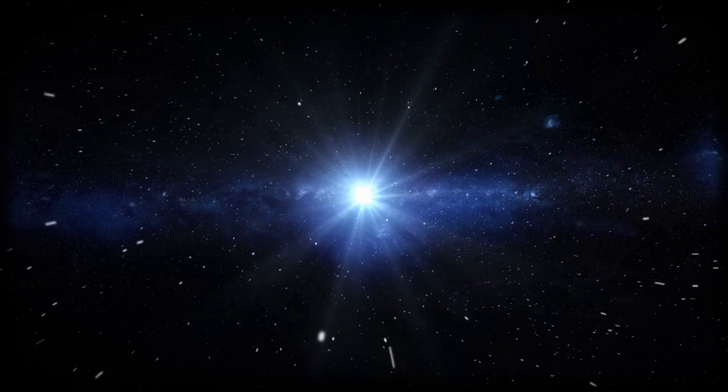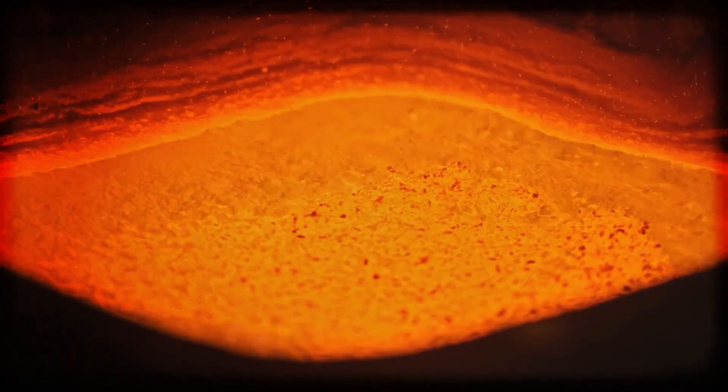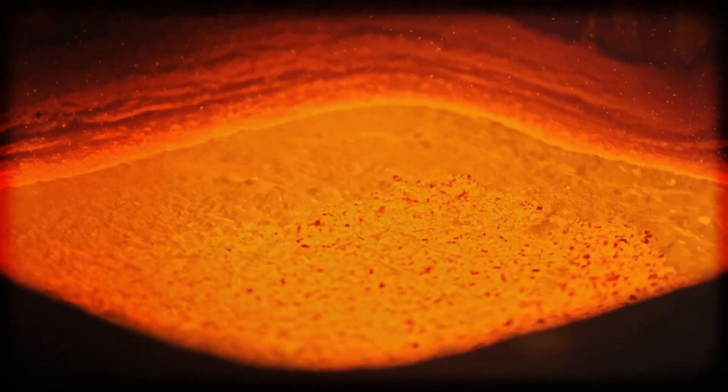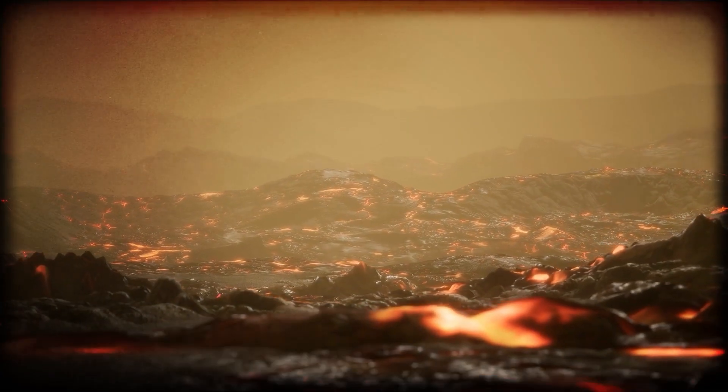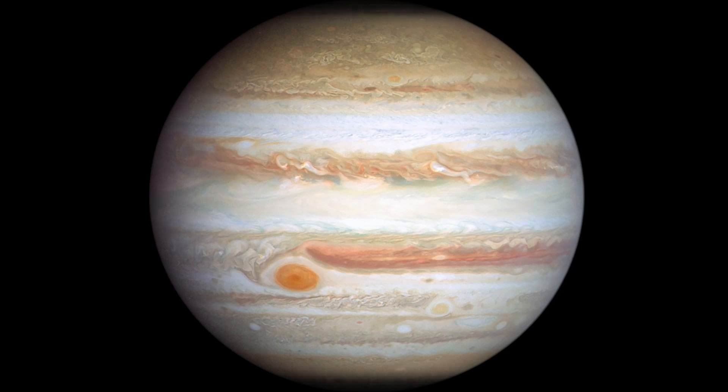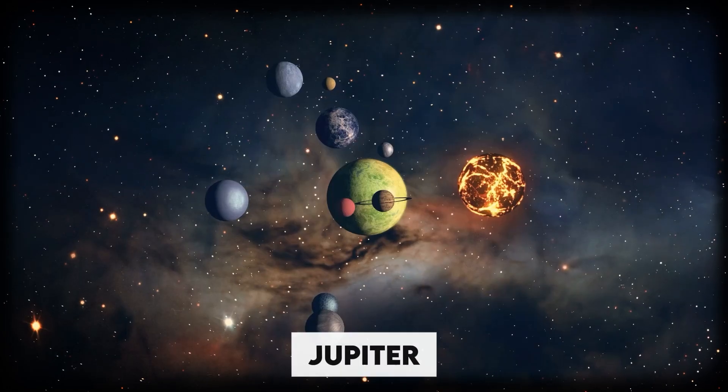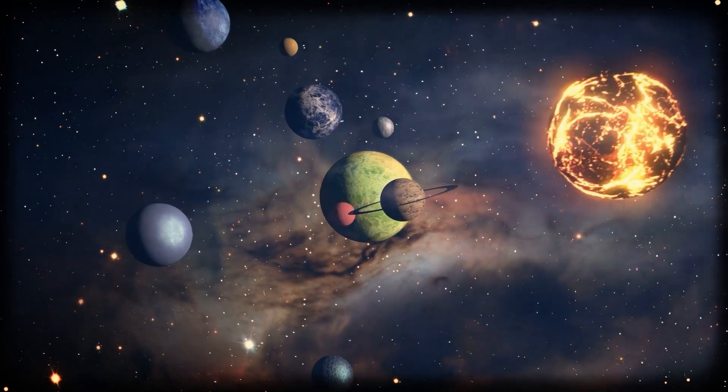Imagine a planet where one side always faces its star, baking at such high temperatures that iron could melt on the surface with seas of molten rock stretching to the horizon. Or picture a gas giant, like Jupiter, orbiting not one, but two suns.